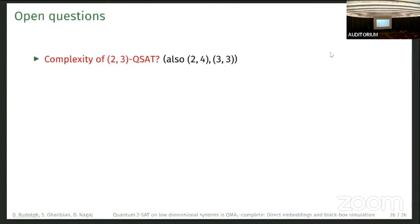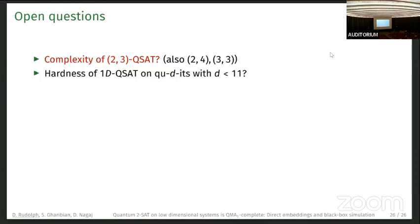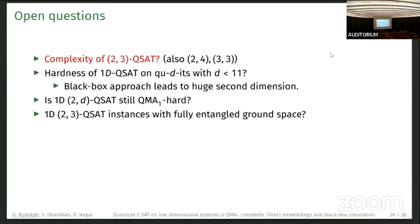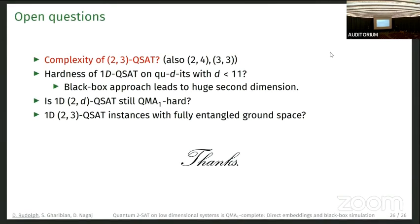To conclude: the main open question is still the complexity of two-by-three QSAT. There are also two open entries in the table — 2×4 and 3×3. What is the hardness of 1D QSAT with local dimension d smaller than 11? Our black-box approach is a bottleneck because it leads to a very large second dimension. Also open: for two-comma-d QSAT, which may be QMA-hard, and whether 2×3 QSAT instances can even achieve a fully entangled ground space — a seemingly simple question that remains unanswered. Thank you.